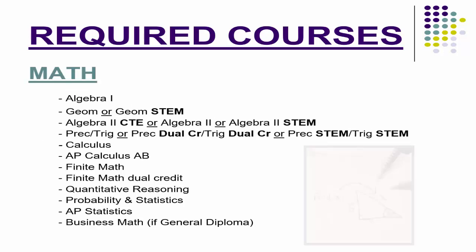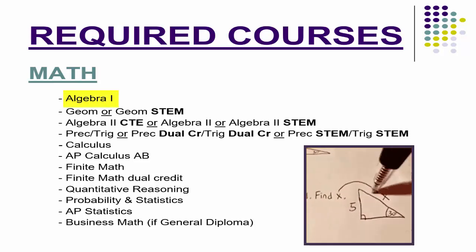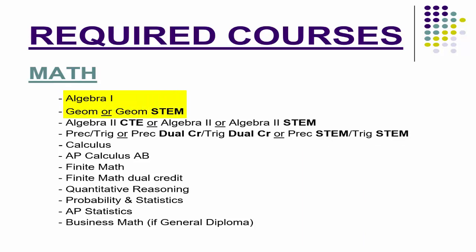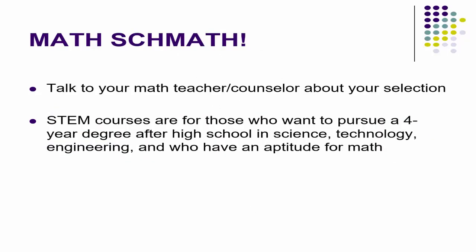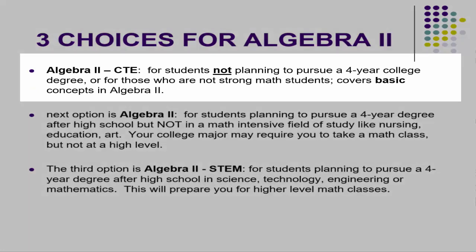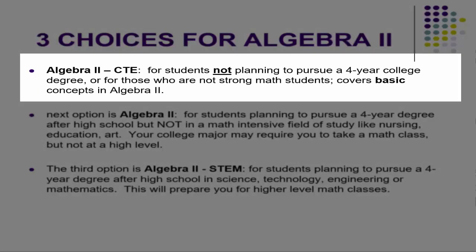Continuing required courses: math. If you're Core 40 or higher diploma type, you must complete Algebra 1, Geometry, and Algebra 2. After that there are many options — talk to your math teacher or Mr. Cross and Mrs. Knurk if you have questions. STEM courses are for students pursuing a four-year degree in science, technology, or engineering who have an aptitude for math. You'll notice Algebra 2 has three choices. Algebra 2 CTE is for students not planning a four-year degree or those who are not strong math students — it covers basic Algebra 2 concepts.